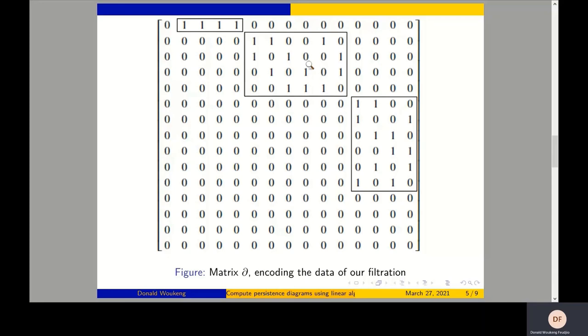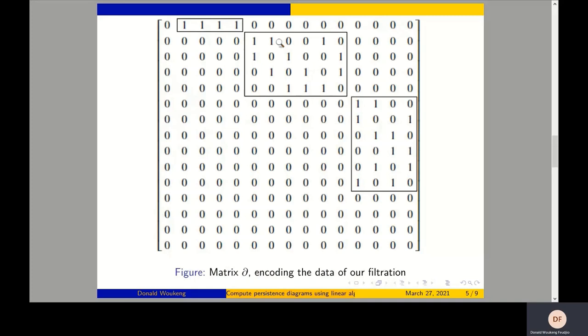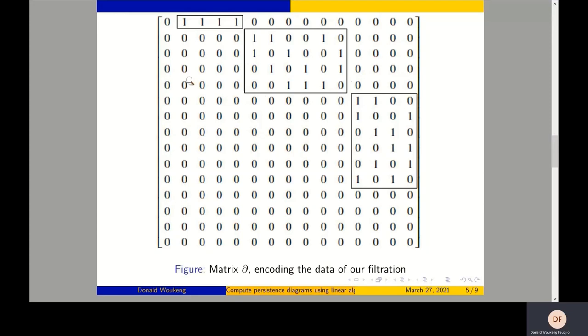We now have our boundary matrix. How do we reduce it? There is an algorithm for reducing the boundary matrix, also given in the book Computational Topology by Edelsbrunner and Harer. This algorithm takes our matrix, where j represents the column. If two columns of the matrix have the same lowest one — meaning the row index of the bottom-most one in each column — then we perform a column operation.